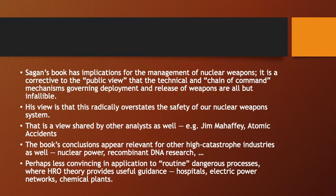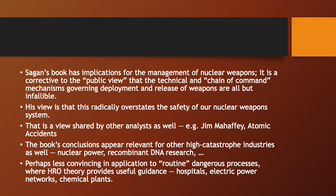Sagan's book has important implications for the management of nuclear weapons and is a corrective to the public view that technical and chain-of-command mechanisms governing deployment and release of weapons are all but perfect. He believes this view radically overstates the safety of our nuclear weapons system - a view shared by other analysts including Jim Mahaffey, a nuclear engineer who wrote Atomic Accidents. The book's conclusions are broader than nuclear weapons safety, relevant to other high-catastrophe industries including nuclear power, recombinant DNA research, and areas where literally a whole nation might be affected by an accidental outcome.